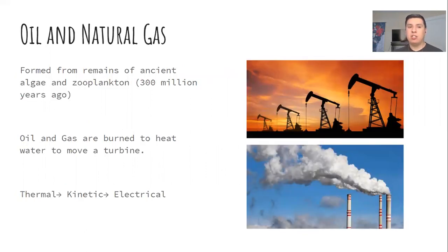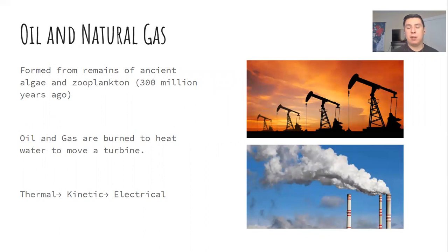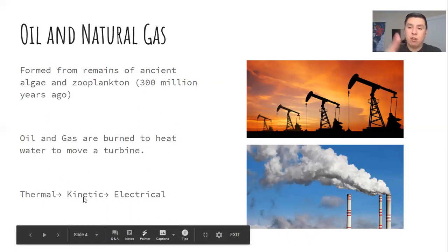The first energy source I want to talk about is oil and natural gas. These are what you see with the oil rigs, and when you burn the oil, smoke can come out. Oil and natural gas are formed from remains of ancient algae or zooplankton from over 300 million years ago—basically fossil fuels. Oil and natural gas are burned to heat water, which turns into steam. The steam moves a turbine to produce electrical energy. We have thermal energy from the burning, kinetic energy from the steam moving the turbine, and then electrical energy.